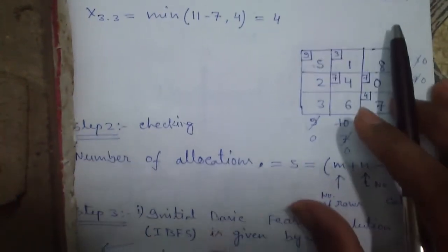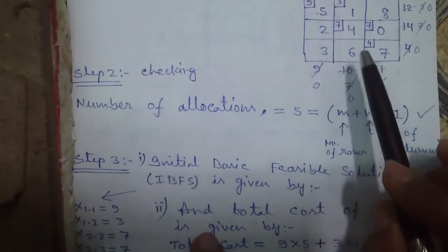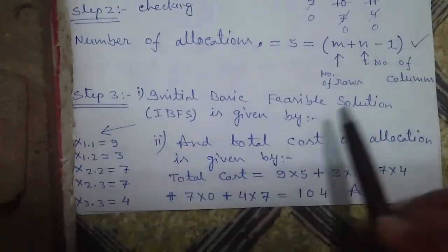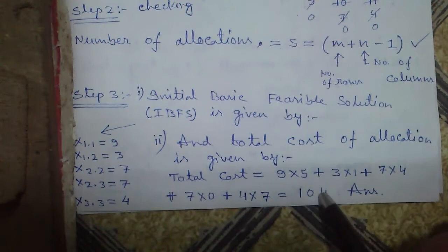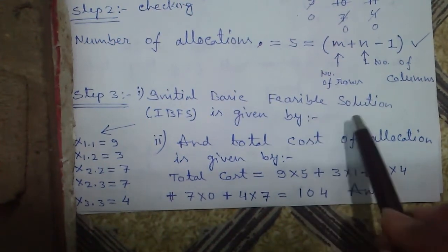I have also done the same problem you can see by another method that is called NWCR or North West Corner Rule. But the answer comes 104 units which is much higher than the matrix minimum method.